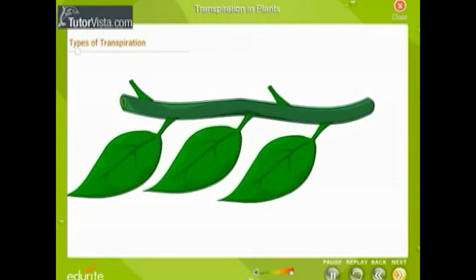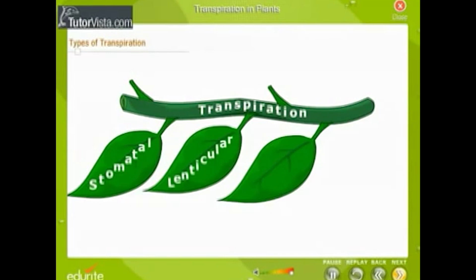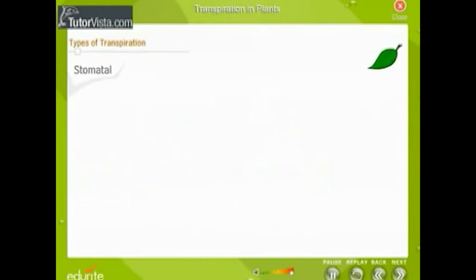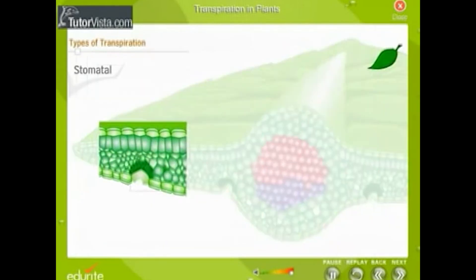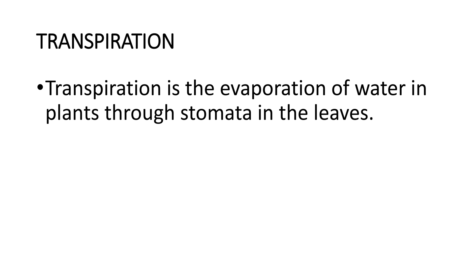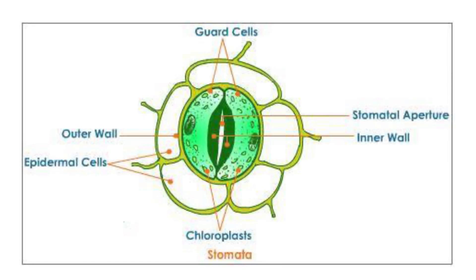There are three types of transpiration depending on the site of transpiration: stomatal transpiration, lenticular transpiration, and cuticular transpiration. Stomata are openings on the leaf surface through which transpiration takes place. The stomata are surrounded by guard cells which help the stomata to open and close. Transpiration takes place primarily through stomata in the leaves, and we are going to learn the structure of stomata.